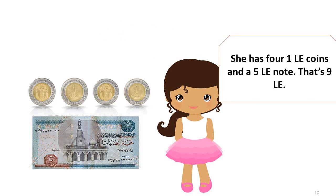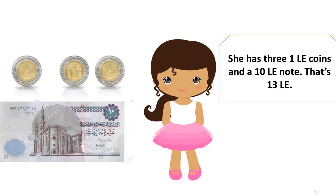She has four one-pound coins and a five-pound note. That's nine pounds. She has three one-pound coins and a ten-pound note. That's thirteen pounds.